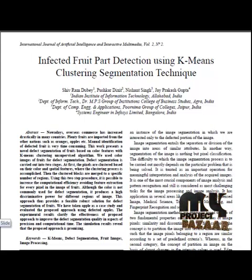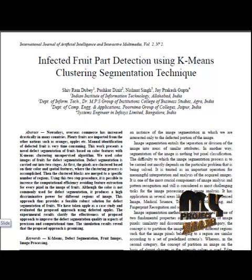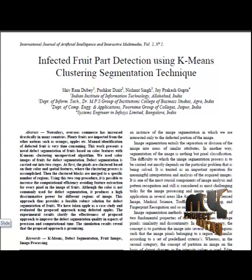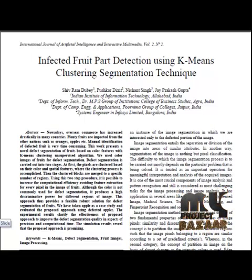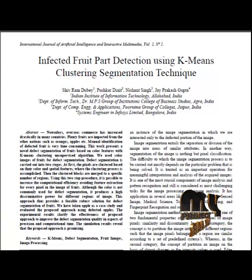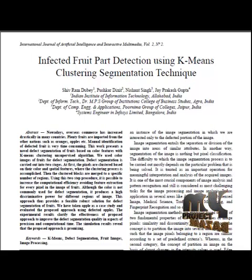In the proposed work, we use k-means clustering based segmentation to identify defective apples. First, the test apple image is taken in RGB color space, then it is converted into LAB color space. The colors are segmented using k-means clustering, each pixel is then labeled, the input image is segmented based on color differences, and finally the defective cluster is identified.